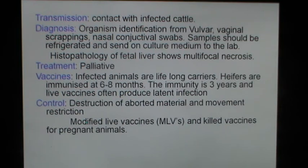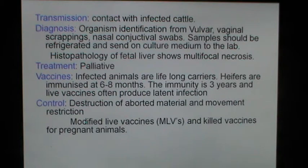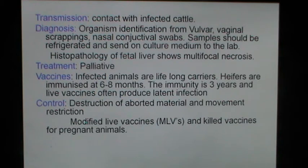The transmission of IBR is by contact with infected cattle. Organism identification can be done from vulvar vaginal scrapings and nasal conjunctival swabs. Samples should be refrigerated and sent on culture medium to the lab. Histopathology of the fetal liver shows multifocal necrosis. The treatment is palliative. Infected animals are lifelong carriers. Heifers are immunized at 6 to 8 months with available vaccines. Immunity lasts 3 years and live vaccines often produce latent infection. Control includes destruction of aborted material and movement restriction. Modified live vaccines and killed vaccines are available for pregnant animals.